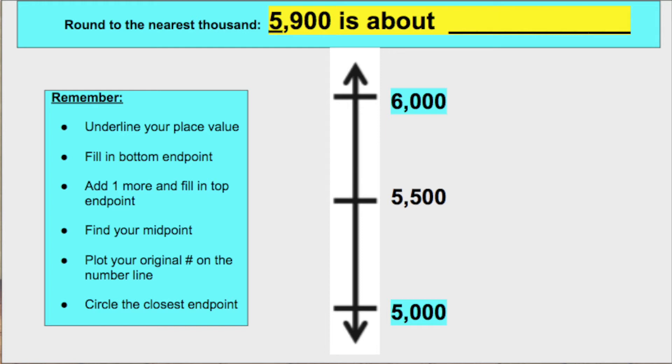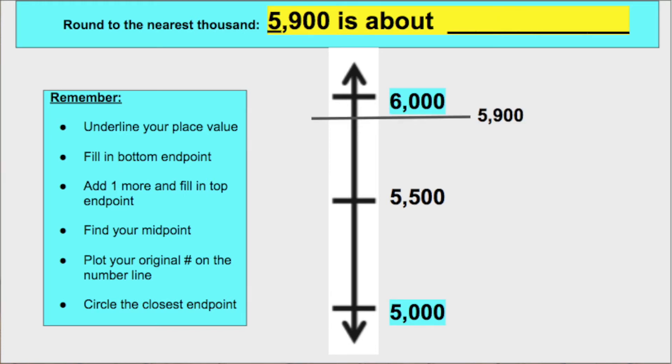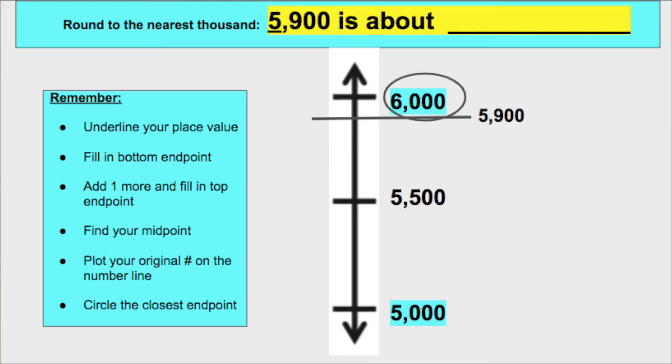Now bring it back, we're almost done, so just hold tight. We gotta plot our numbers so we can round right. Five thousand nine hundred goes right here. It's above my midpoint and we can see clear, it's closer to six thousand, so let's circle that. So it's about six thousand. Yeah, that's a fact!